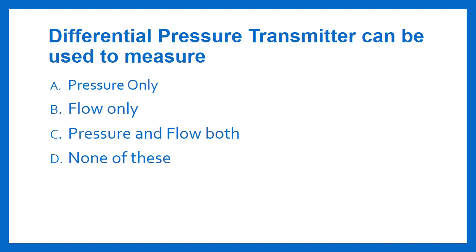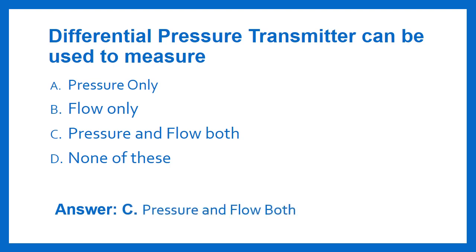Differential pressure transmitter can be used to measure: Option A - Pressure only, Option B - Flow only, Option C - Pressure and flow both, Option D - None of these. The answer is Option C: Pressure and flow both.